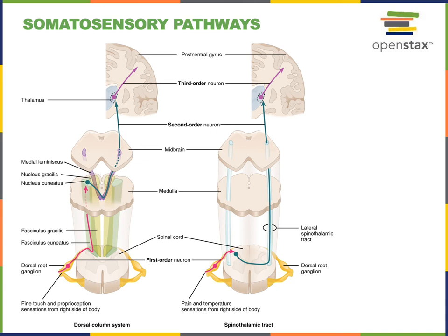There are two major sensory pathways for the somatosensory modality: the dorsal column system and the spinothalamic tract. The dorsal column system relays somatosensory information of pressure, vibration, and hair movement, as well as proprioceptive information about the posture of the body. This information is relayed from the Merkel cells, Meissner's corpuscles, Ruffini corpuscles, and hair root plexus sensory receptors distributed through the skin.